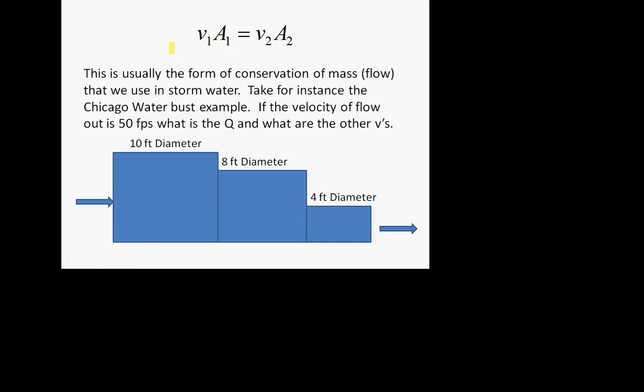I used an example in class that had to do with a water main break in Chicago. We went on the assumption that there was water in a water tower, and talked a little bit about energy flow. If you knew the velocity of water leaving the break going straight up, you could use the equation: velocity equals the square root of 2gh. Work it backwards — v squared over 2g, the velocity head, tells you how high that water will go.